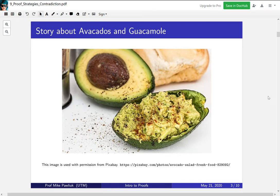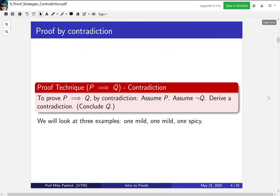Let's see this a little bit more formally. So if you're trying to prove that P implies Q, and you want to prove it by contradiction, it goes as follows. Assume that P is true, and assume that not Q is true.